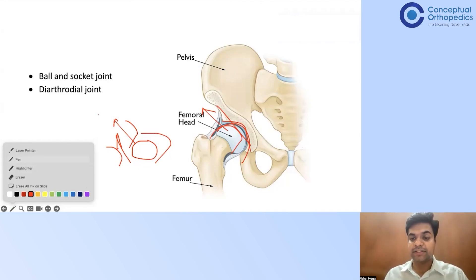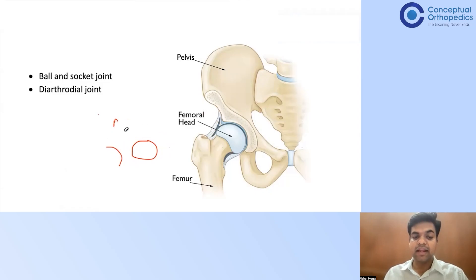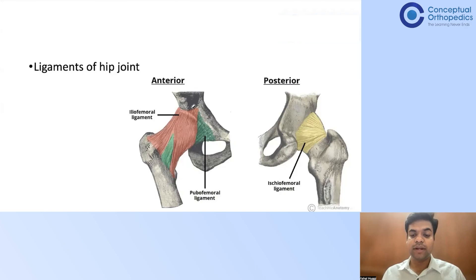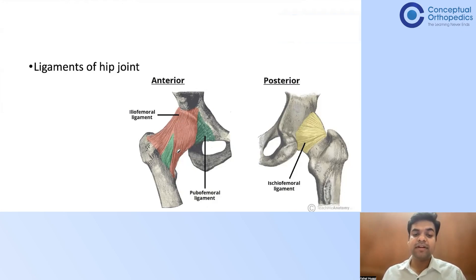Apart from bony architecture, there is the ligamentum teres inside, and three important external ligaments. The acetabulum is formed by the ilium, pubis, and ischium bones — all three connect to the femur. So the ilium connecting to the femur forms the iliofemoral ligament, the pubis forms the pubofemoral ligament, and the ischium forms the ischiofemoral ligament. The most important point: the iliofemoral ligament is the strongest ligament, attached in an inverted Y fashion.